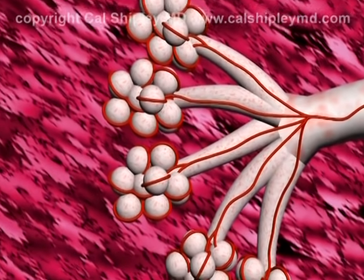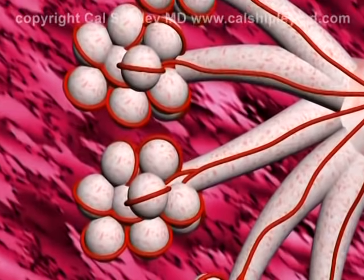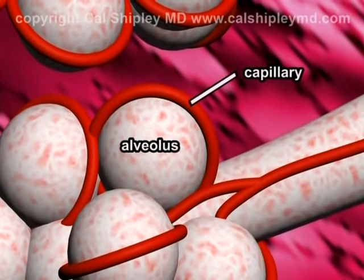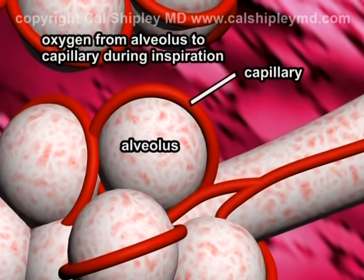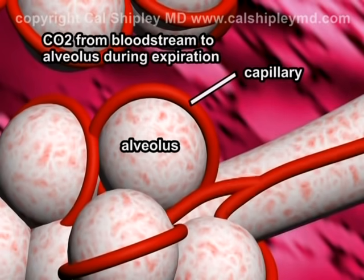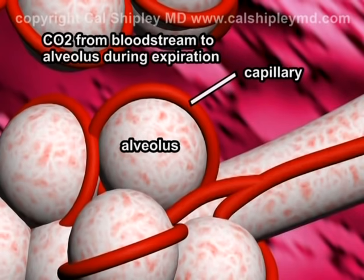Taking a closer look at a single alveolus, we see the close proximity of a capillary vessel, which allows for the transfer of oxygen molecules from the alveolus into the red blood cells of the capillary during inspiration, and vice versa, the transfer of carbon dioxide molecules from the bloodstream into the alveolus during expiration.